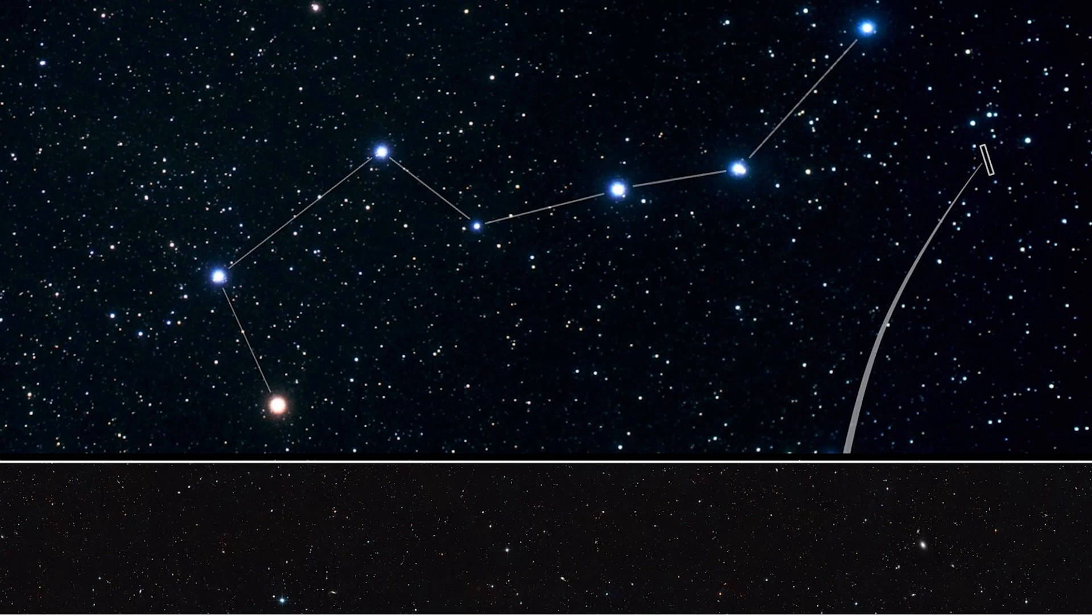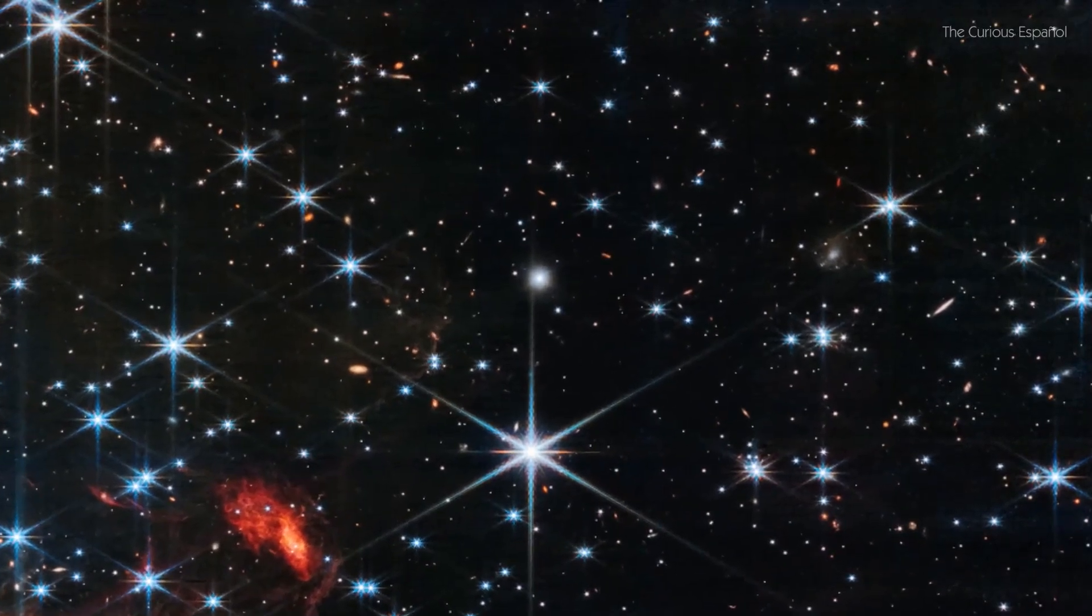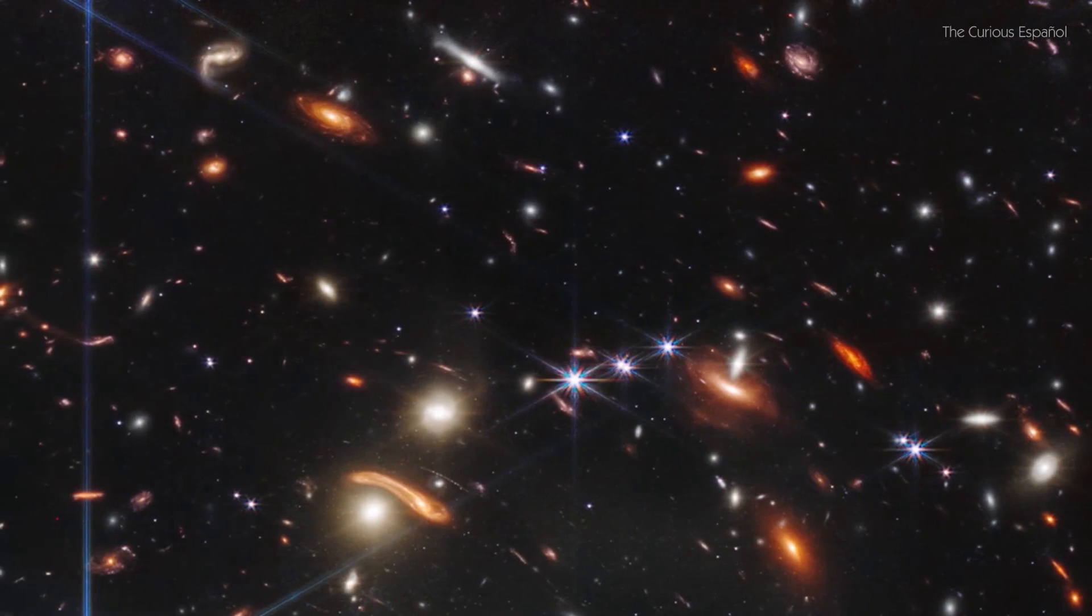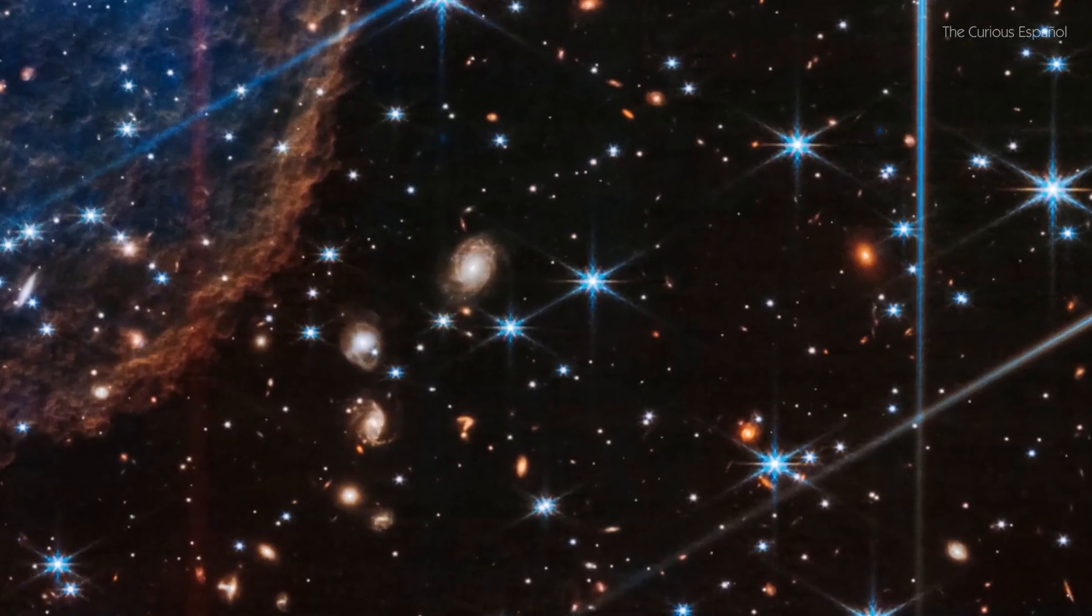This extended band contains about 100,000 galaxies. Of particular interest to astronomers in this visualization is the Massey Galaxy, which serves as an example of the type of early galaxy that the Webb Telescope is capable of studying.